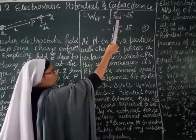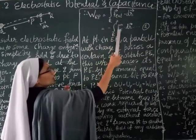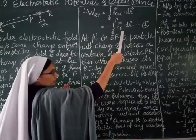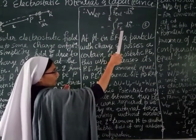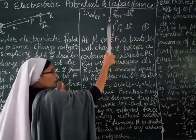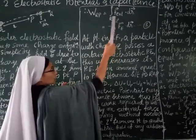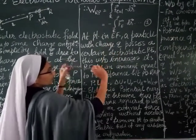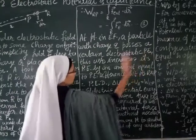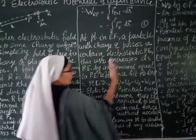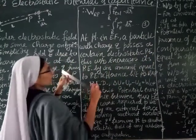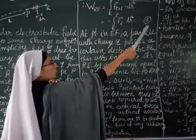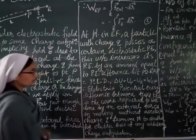F_external will be equal and opposite to the electric force F_E, so we add a negative sign: W = −∫(R to P) F_E · dR. The electric field is in one direction and we apply the external force from outside in the opposite direction — this is equation 1.